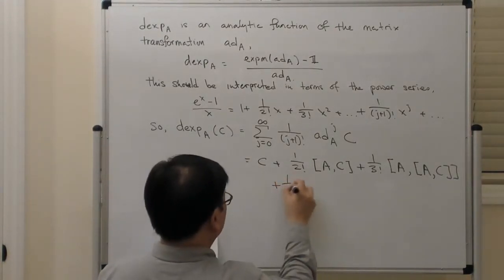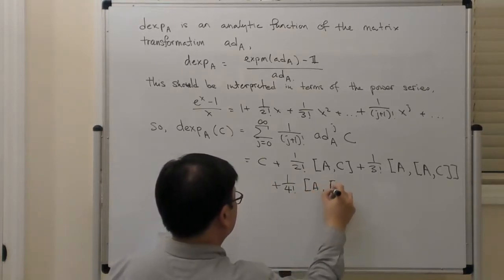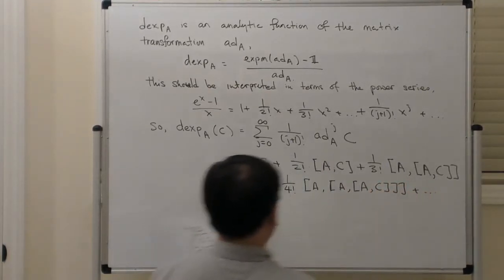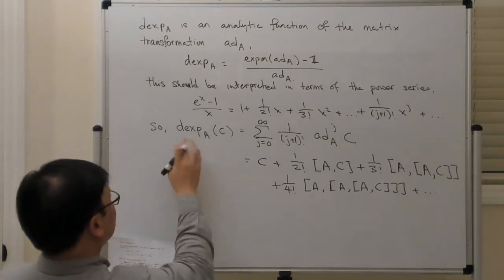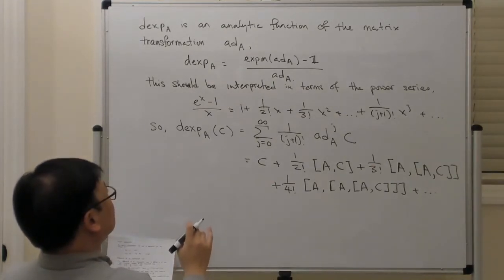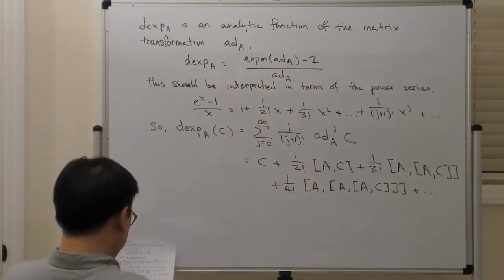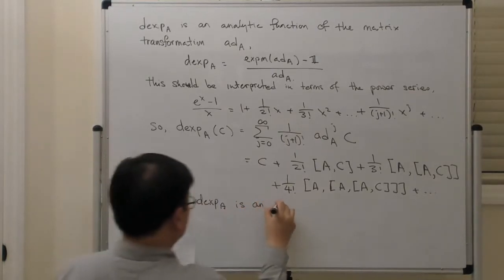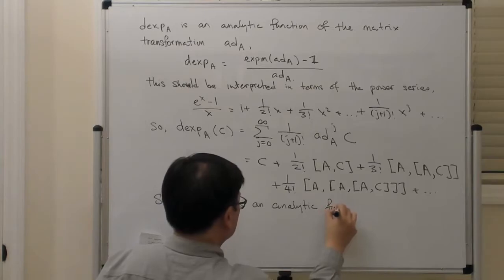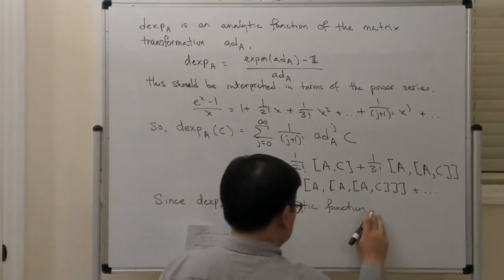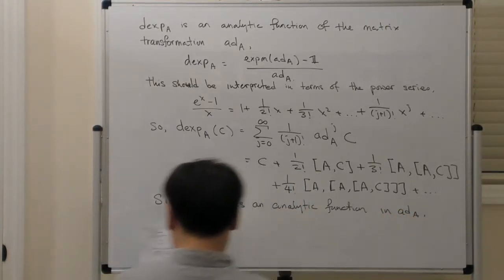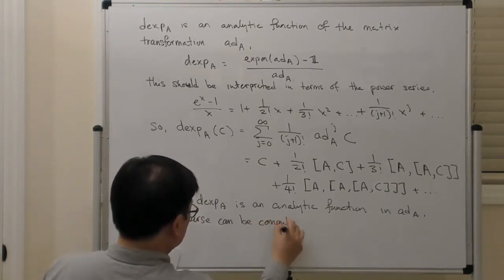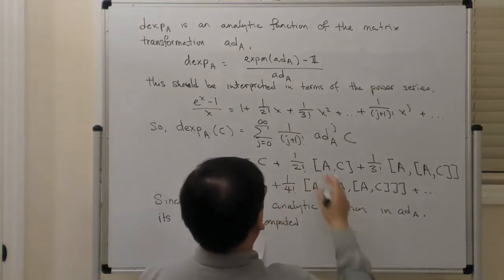The next term is 1 over 4 factorial, and you can see the pattern. The other thing to observe is that because this dexp is an analytic function in little ad A, you can actually invert it by inverting the analytic function. Since dexp A is an analytic function in ad A, its inverse can be computed basically by just taking the reciprocal of this operation — by inverting the analytic function.